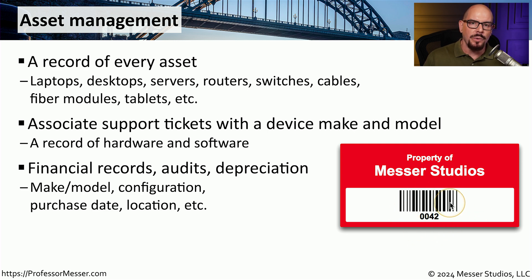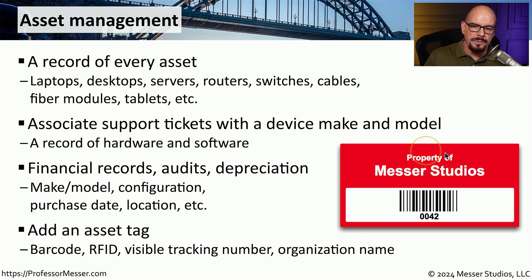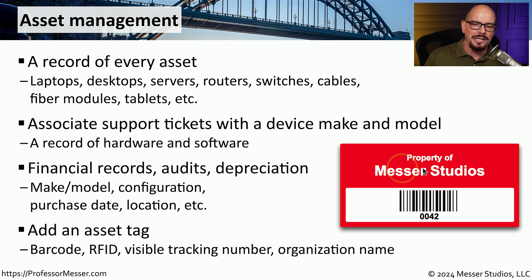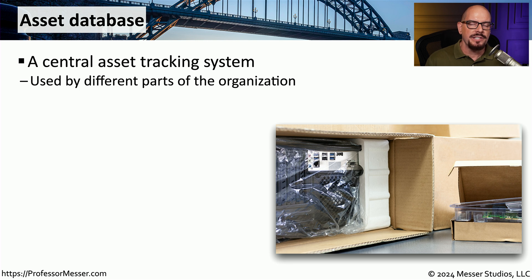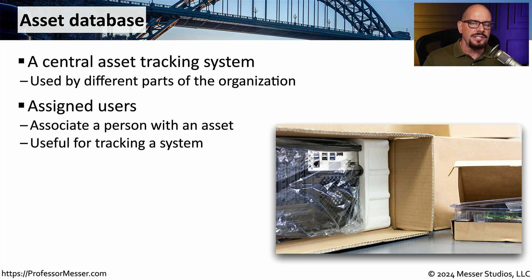These asset tags are usually very visible so that you can find them when you're on the phone with someone in the support team. There might be a barcode or RFID associated with this, and if a third party runs across this device, they'll know exactly who owns that particular piece of equipment. The asset tag connected to the device, the components within that device, and the user who is using that device may all be combined within one single asset database. This becomes a centralized database that could be used by the asset support team, by accounting, by folks in the finance department, and anyone else who may need access to this data. If we need to know the physical location of a device, we can look at our asset database and see what user has been assigned to this particular component — and if we know the user's location, then we also know the location of the device.